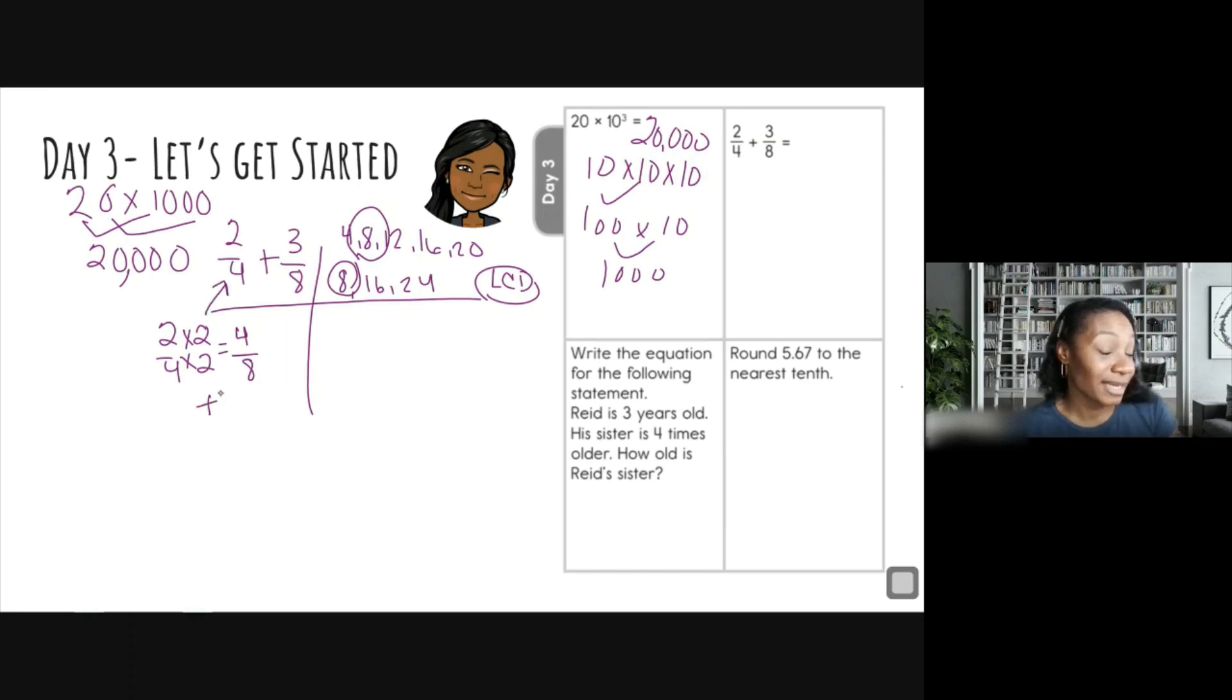I'm just going to bring a plus sign down here to not forget that I am adding, and I'm going to go ahead and add that next fraction, which is three eighths. Sorry, my handwriting is kind of horrible. Four plus three is seven and my denominator stays the same. So my answer over here is seven eighths. All right, let's move on to the next question.